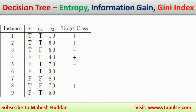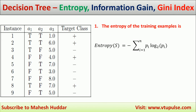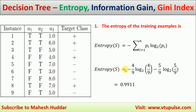First we will try to understand how to find the entropy of this particular data set. Entropy of S is always equivalent to minus summation of pi log pi to the base 2, where pi is the probability of the ith class. If you look at this particular data set, we have nine examples. Out of that, 4 are positive and 5 are negative examples. Hence, the entropy of S is equivalent to minus 4/9 log(4/9) base 2 minus 5/9 log(5/9) base 2. If you solve this equation, you will get the entropy as 0.9911.